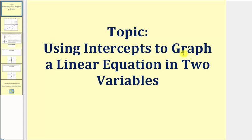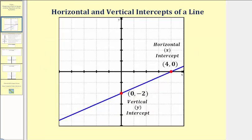Welcome to a lesson on using intercepts to graph a linear equation in two variables. If we take a look at the graph of the blue line here, the point where the line crosses the vertical or y-axis is called the vertical or y-intercept. Notice how this line has a y-intercept of zero comma negative two. The point where the line crosses the horizontal or x-axis is called the horizontal or x-intercept, which would be the point four comma zero.